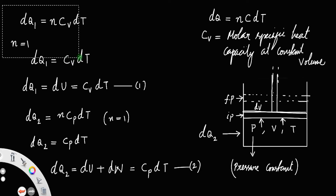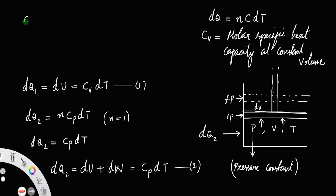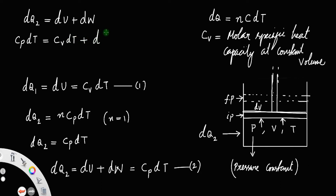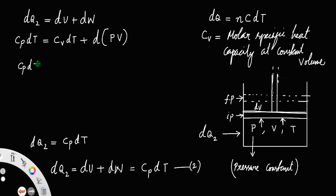Let us write Equation 2 explicitly. We have dq2 = dU + dW, and since dq2 = Cp·dT, we get Cp·dT = dU + dW. We already found dU = Cv·dT, and work is always pressure times change in volume. Since pressure remains constant in this case, dW = p·dV. So: Cp·dT = Cv·dT + p·dV. Let us call that Equation 3.